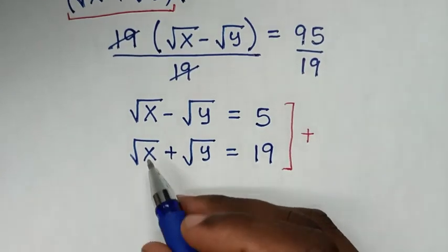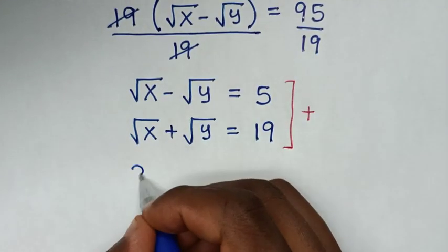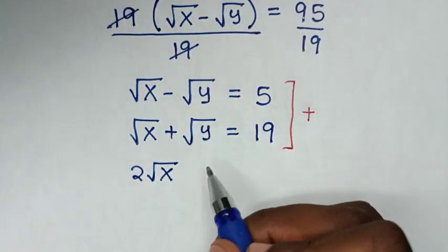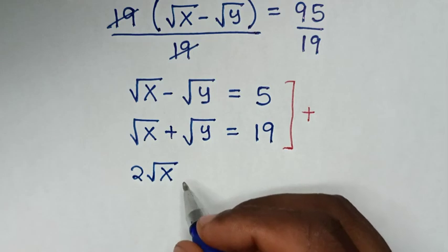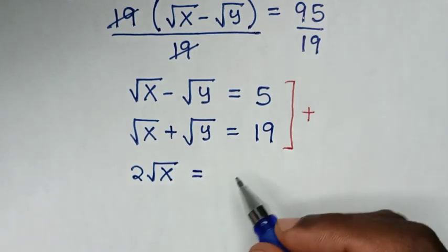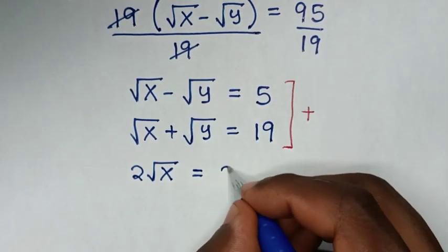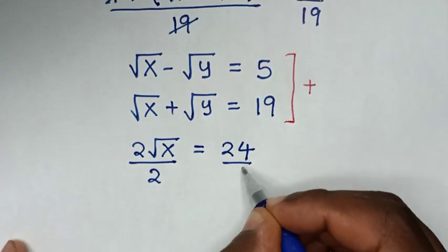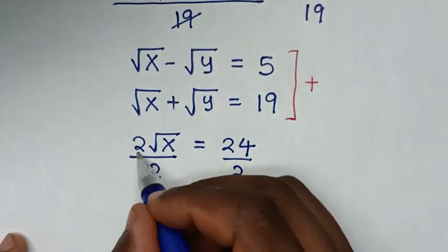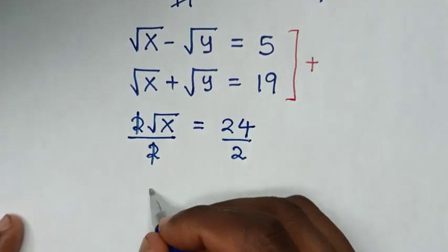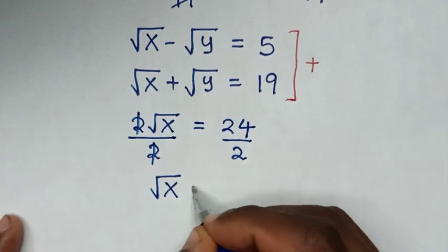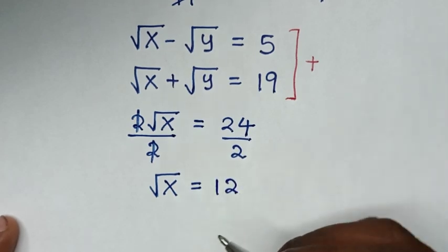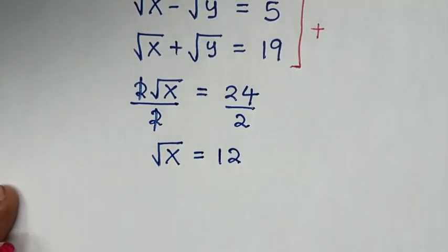Adding the two equations: square root of x plus square root of x gives 2 times square root of x. Negative square root of y plus square root of y cancels to 0. So it equals 5 plus 19, which is 24. Dividing both sides by 2, square root of x equals 24 divided by 2, which is 12. From here we find the value of x.